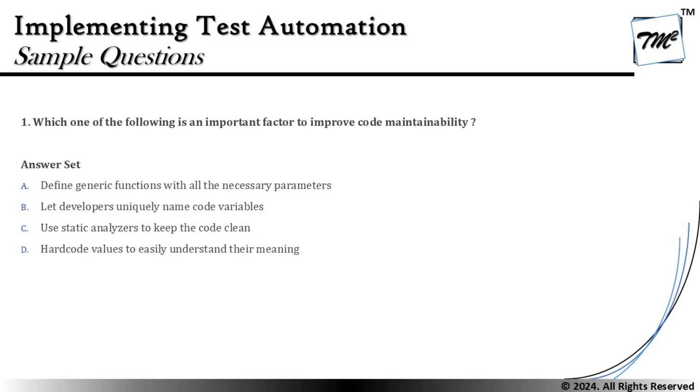Option B says: let developers uniquely name code variables. Uniqueness is not what we are interested in — we want a standard naming convention to be followed as a principle to write clean code. But even naming conventions are not going to help with maintainability; it's more a part of learnability, helping someone else understand what the code is about.